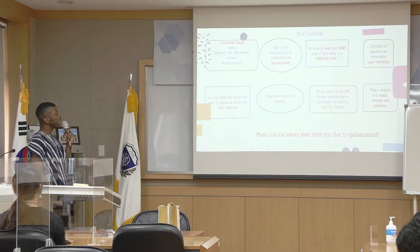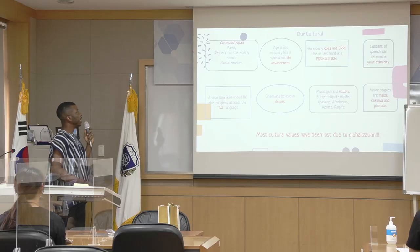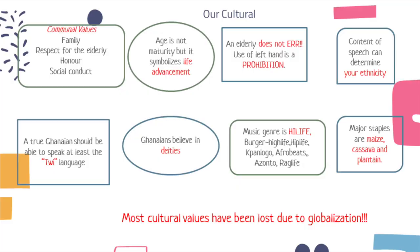For example, if I become richer than my brother and we go to a meeting, you have to accord your brother the needed respect. It doesn't matter whether the elderly lived life well or not. In the Ghanaian setting, we say the elderly does not do wrong — they do not err.